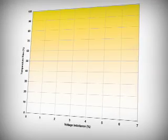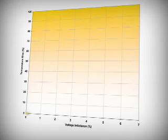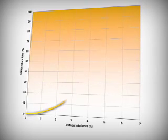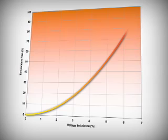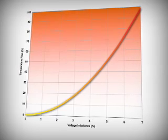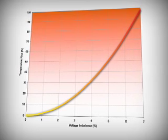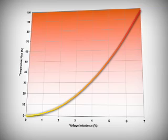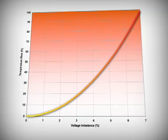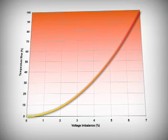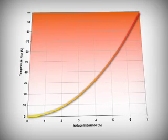Here's another way to see just how critical voltage imbalance really is. Even a slight voltage imbalance causes a significant temperature increase in the windings. As the imbalance grows worse, the temperature skyrockets. And that's bad news for compressors, because operating a motor at 10 degrees centigrade over its rated temperature cuts its life in half.